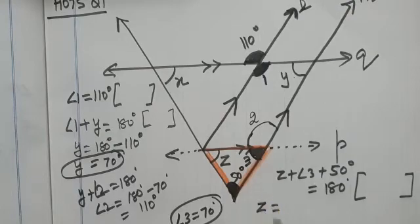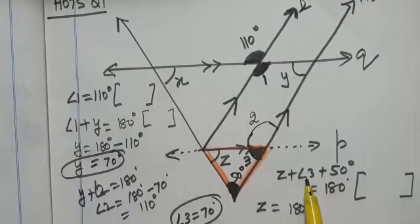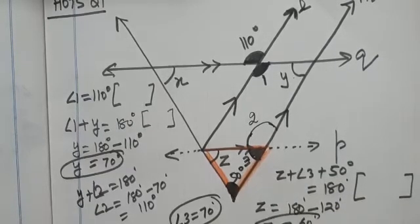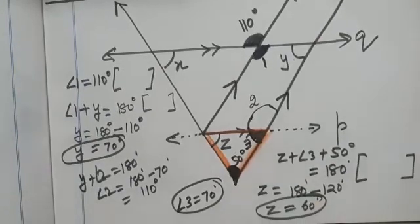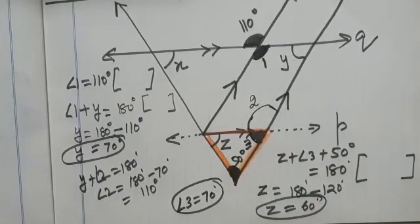So can you find Z now? What will be Z? Z will be 180 minus what is angle 3? You have found it is 70, and 70 plus 50 that is 120. So 180 minus 120 is 60. So what is the value of Z? Value of Z is 60 degrees.